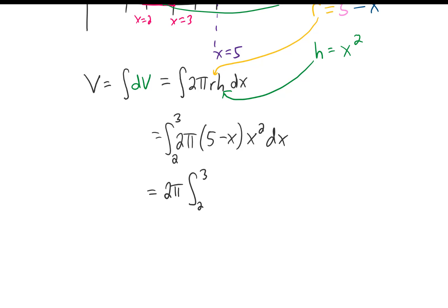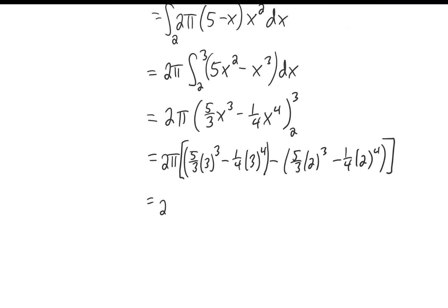Now let's complete this problem by finishing up the integral. I'm going to multiply the x squared through the parentheses, and now we can integrate. And we can plug in our limits of integration from two to three. We can simplify a little bit. Let's see, one of the threes in the denominator here is going to cancel with one of the threes in the numerator. That's going to give us five times nine, which is 45. Three to the fourth power is 81. Two cubed is eight, which we can multiply by five to get 40 thirds. And two to the fourth is 16, which we can divide by four to get four.